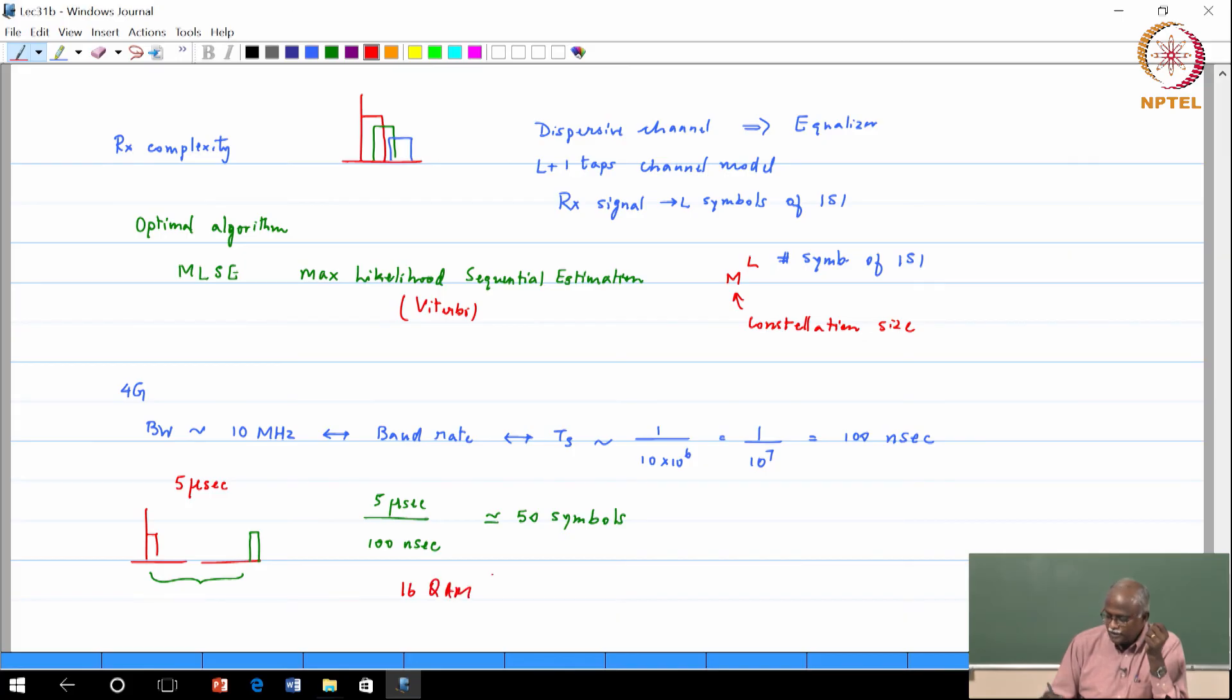And if I was using 16 QAM, my equalizer complexity with 16 QAM equalizer complexity is going to be 16 raised to the power 50. Mind boggling.